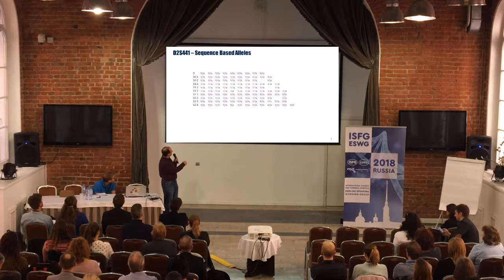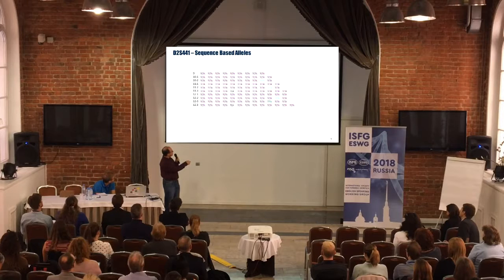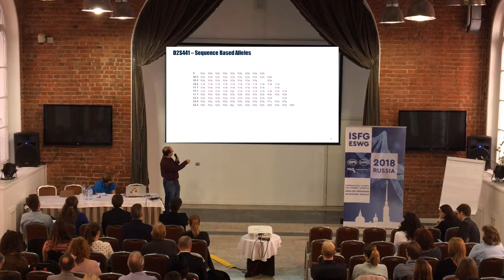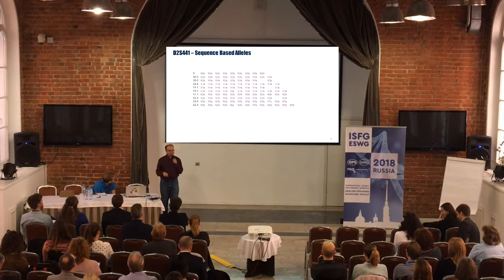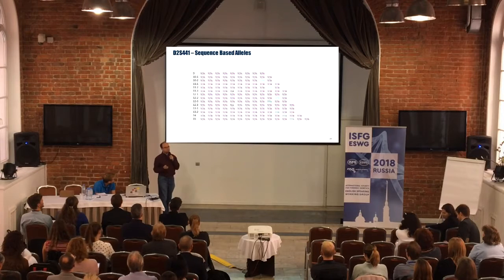For allele 12, we've got: 12 TCTAs; then 10 TCTAs, 1 TCTG, then 1 TCTA; and down here, 9, then a different sequence motif, and then a couple more. So we're getting many more different versions by sequence than we were by size.